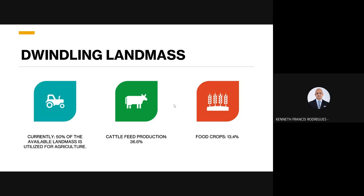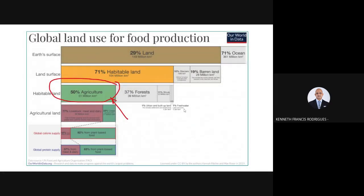The land available for agriculture is dwindling. Two solutions exist: one is to reduce the amount of cattle — Brazil, one of the world's largest meat producers, has cut large areas of rainforest just to produce soybean and forage for cattle. The other solution is to go back to smart farming and utilize whatever we have more efficiently.